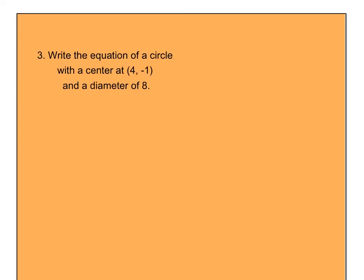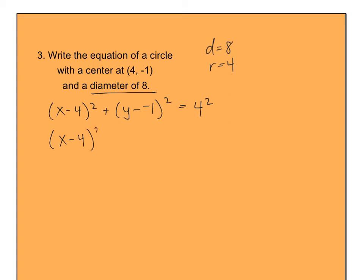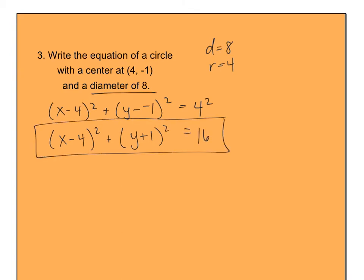Please pause the video and try number 3 on your own. If you've unpaused the video, notice the equation here isn't simplified yet. It said the diameter is 8 — remember, you need the radius. If your diameter is 8, your radius is 4. So the final answer is x minus 4 squared plus y plus 1 squared equals 16. If you had 64, they got you.